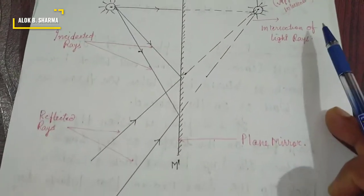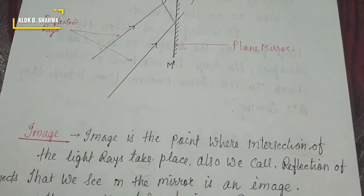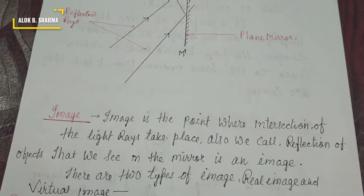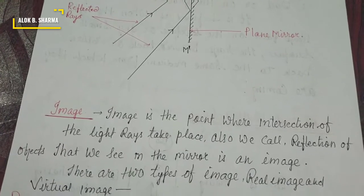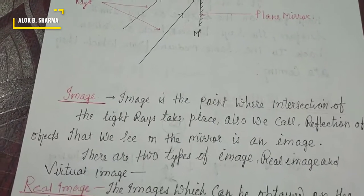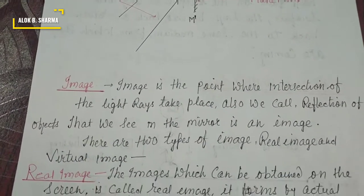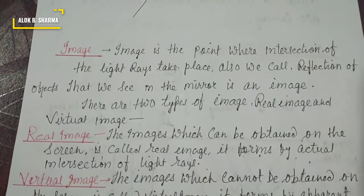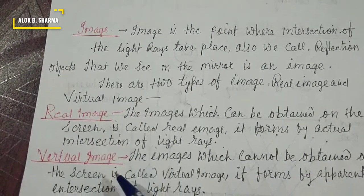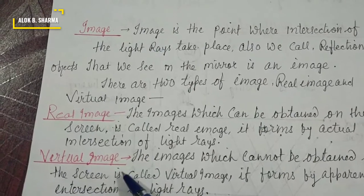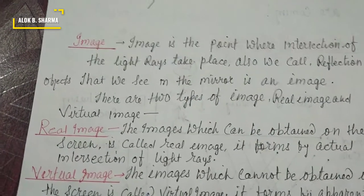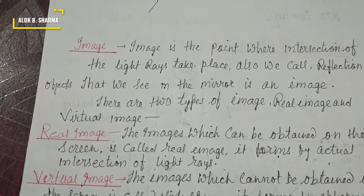So image is the reflection of an object, and it forms when light rays intersect. If there is actual intersection, it is a real image. If there is apparent or virtual intersection, it is a virtual image.